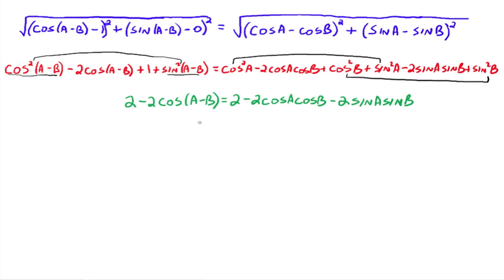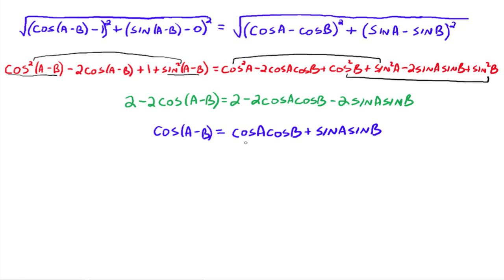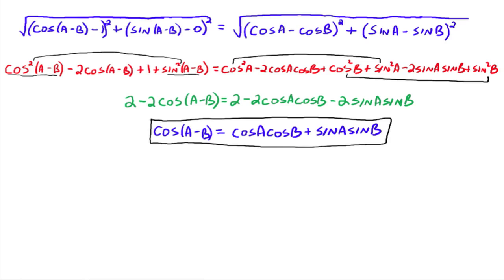We subtract 2 from both sides and divide both sides by −2 to get: cos(A−B) = cosA cosB + sinA sinB. This is our identity for the cosine of A minus B.